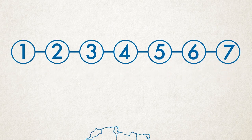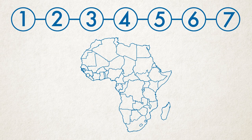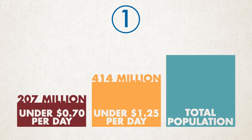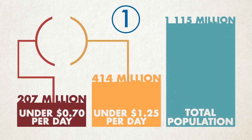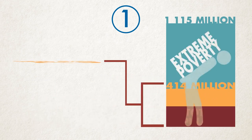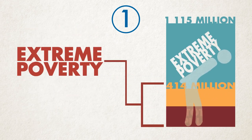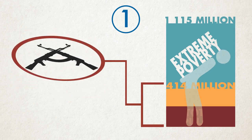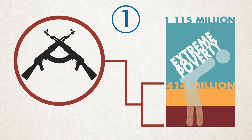Seven relationships explain the relatively high levels of internal armed conflict in Africa. The first is poverty. Internal armed violence is more frequent in poorer than in wealthier countries. More than one third of Africa's population still lives in extreme poverty. Poverty is exacerbated by inequality, and inequality fuels violence.